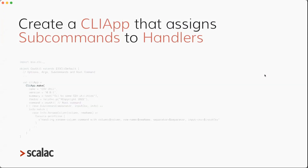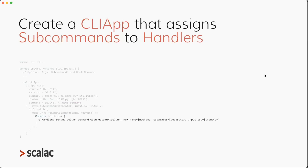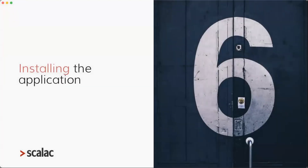To implement the cliApp required by ZCLIDefault, you use CLIApp.make, providing a name, version, summary, footer, and the root command. After that, you assign handlers for each subcommand. A handler is a function from a subcommand to a ZIO effect — your handlers can connect to databases, call external APIs, create files, anything you want. For example, I'm defining a handler for the RenameColumn subcommand that does a console.println ZIO effect, printing the inputs provided to the subcommand.